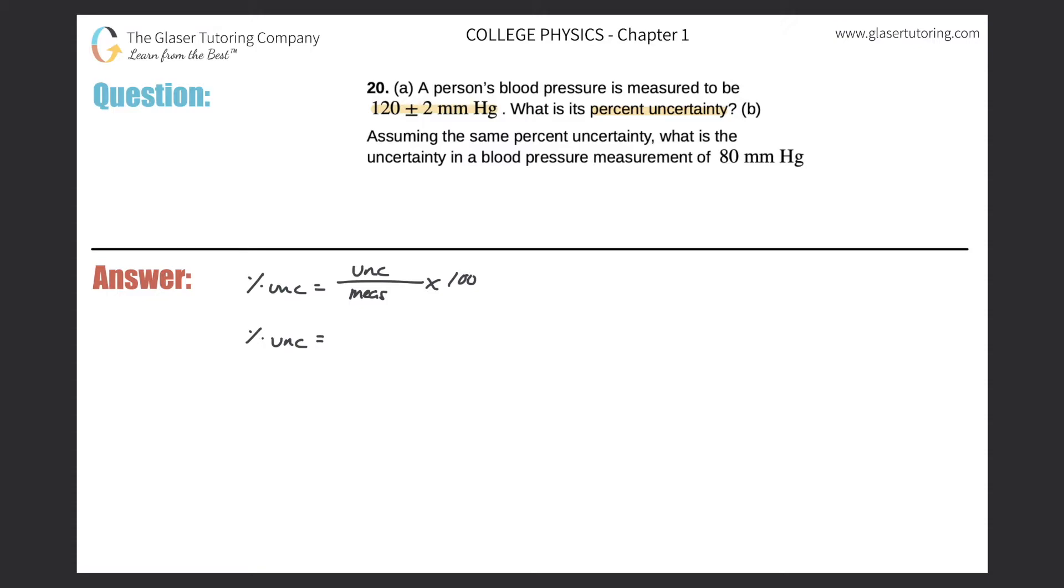Now remember, the numbers or these values are always written in a certain format, meaning that if I look at this, I can create a generalized format. So they're going to give the measured number plus or minus the uncertainty. So there's really two parts of this, the measured number and then the uncertainty value. So the 2 here in this number will represent the uncertainty value, and the 120 will actually represent the measured value.